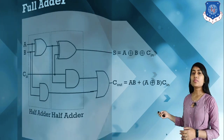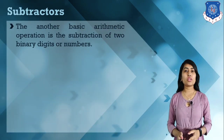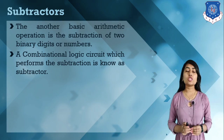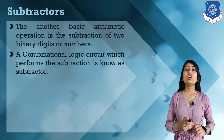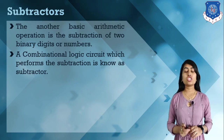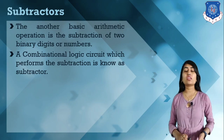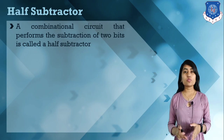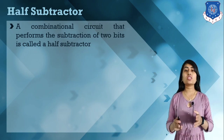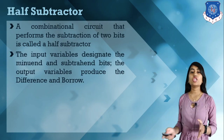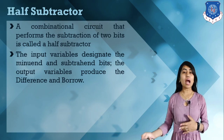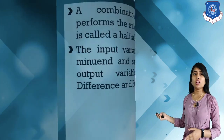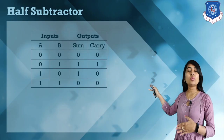Now let's discuss subtractors. Subtraction is another most basic arithmetic operation. A subtractor is a combinational logic circuit which performs subtraction of binary digits. We have two types: half subtractor and full subtractor. The half subtractor performs subtraction of two bits with inputs A and B and two outputs: difference and borrow.